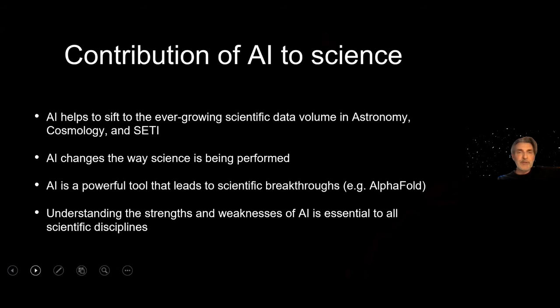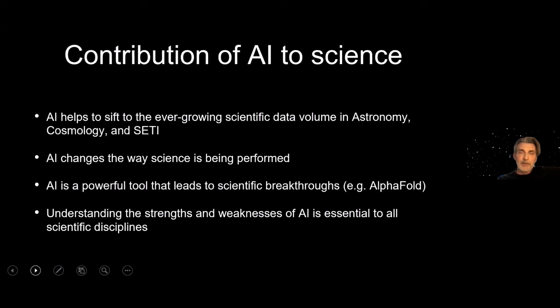What this shows is that deep learning methods can contribute to science by helping to sift through the ever-growing volume of scientific data in astronomy, cosmology, and the search for extraterrestrial intelligence. For instance, the Breakthrough Listen project is generating lots of data, and other astronomy projects are creating an exponential increase in data — it's undoable for humans to sift through all of it. AI is changing the way science is performed, not only in these fields but also in others, such as the recent AlphaFold breakthrough in protein folding. For all branches of science it's essential to understand AI.